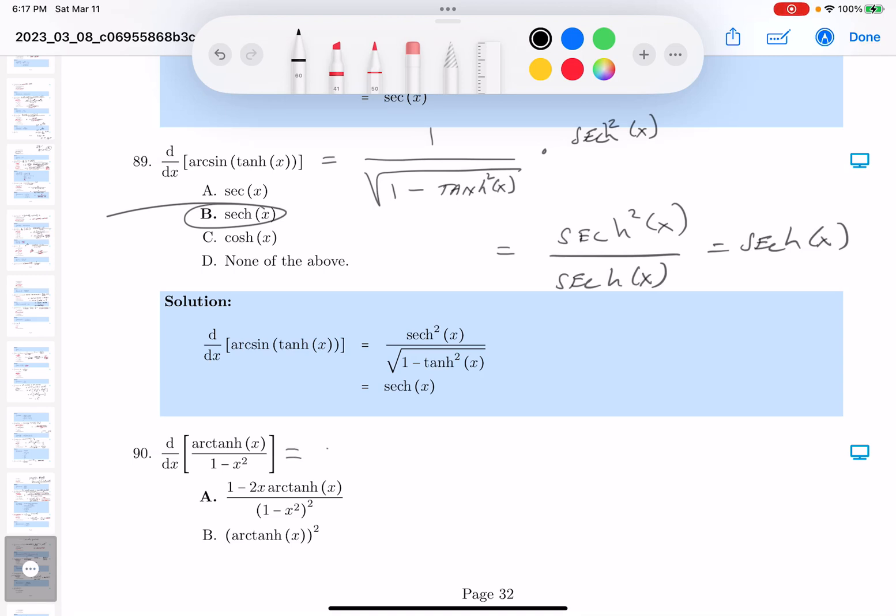Okay, let's do it. It's going to be 1 minus x squared squared, bring it to the top, 1 minus x squared.